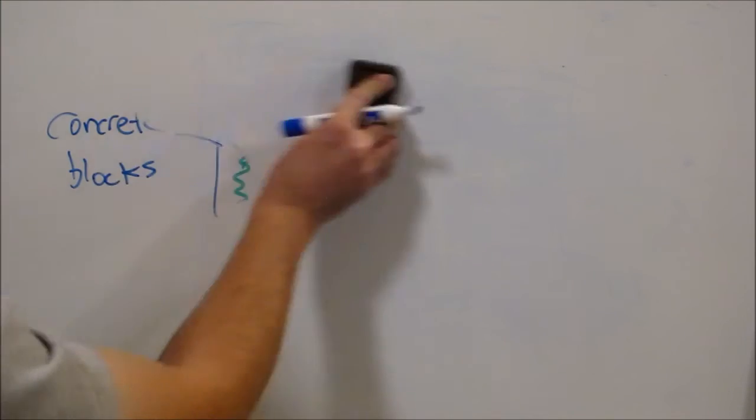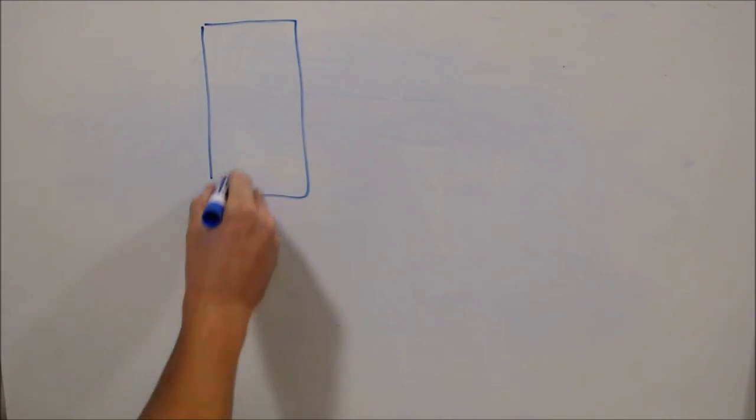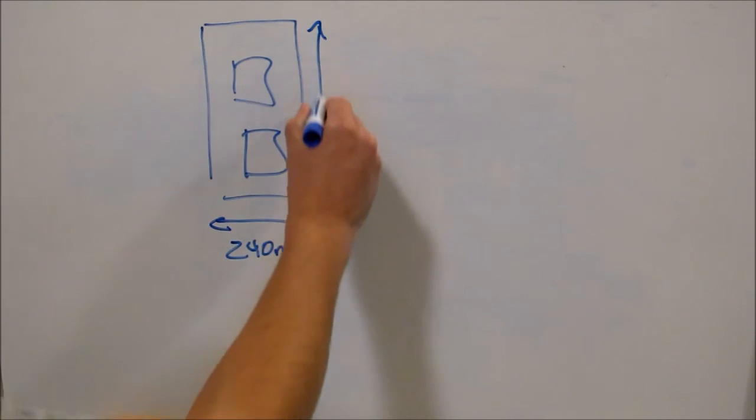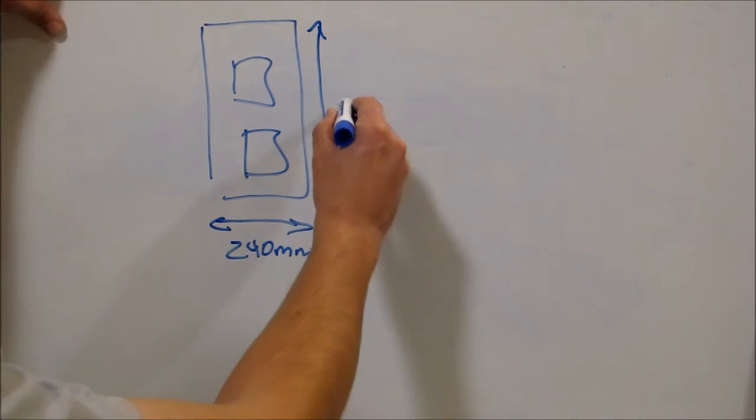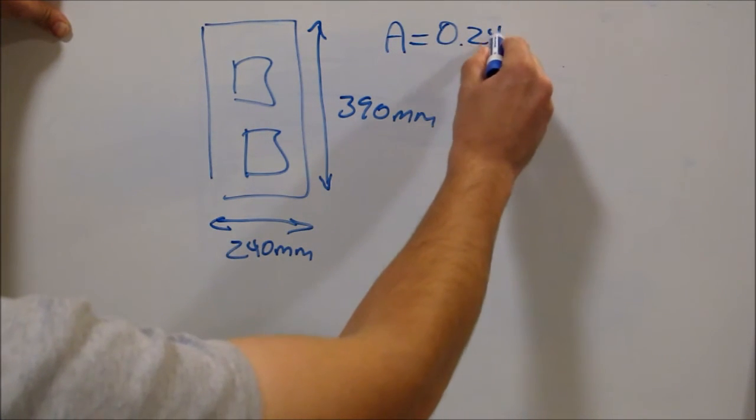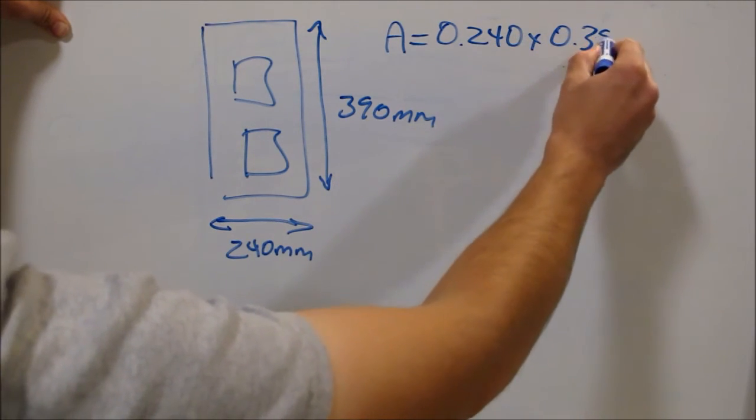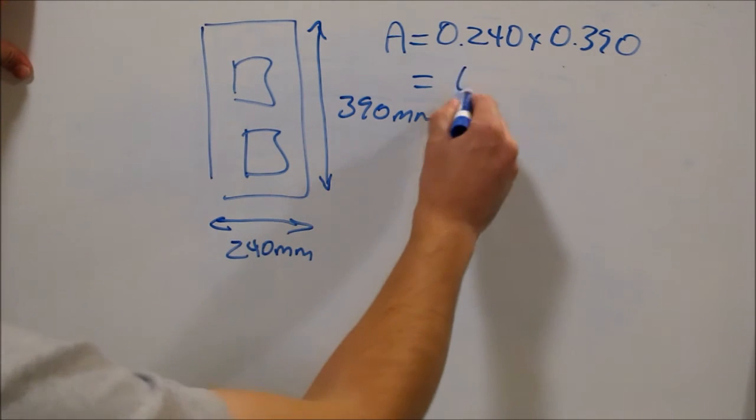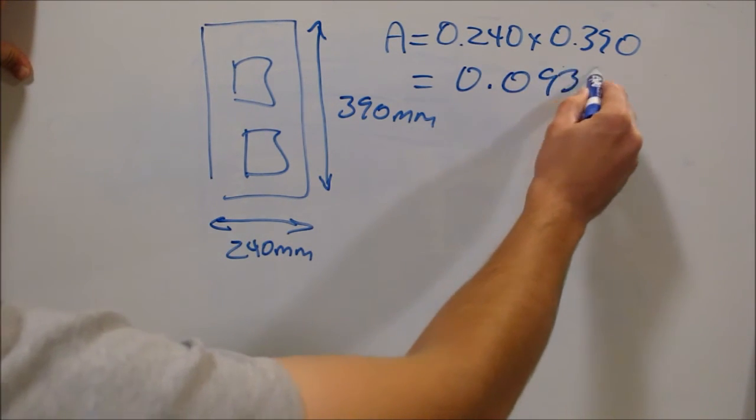So let's calculate the K. Recall that the block size was, this here was 240 millimeters, this was 390. So our area is 0.24 times 0.390 and I'd put it in meters. And when you calculate that out, we'll get 0.0936 meters squared.